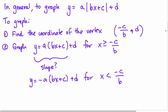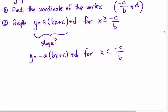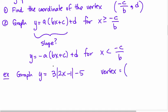Let's take a look at an example. I'll leave this find the coordinate of the vertex because that's the most important part. Let's graph y equals 3 times absolute value of 2x minus 1 minus 5. We'll start off by finding that vertex. This is a, b, c, and d. So it's minus c - minus minus 1 is 1 - and the b value is 2, and then the d value is minus 5.